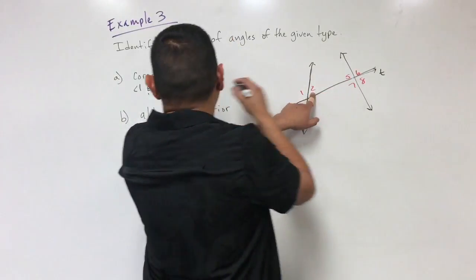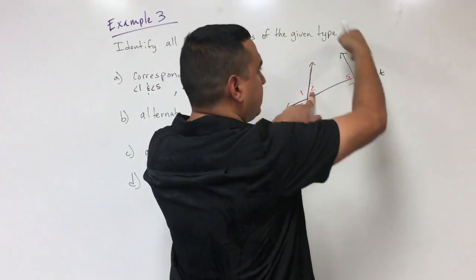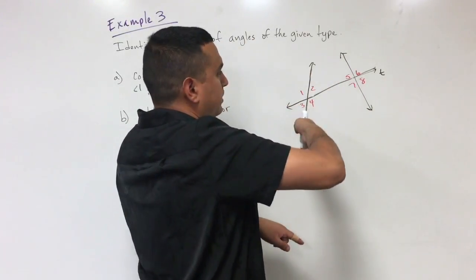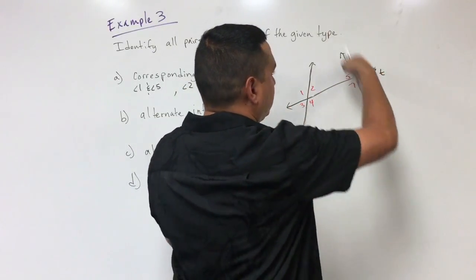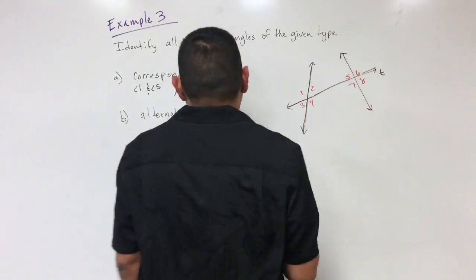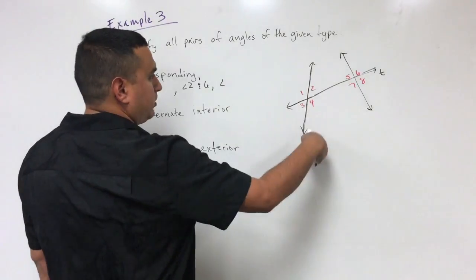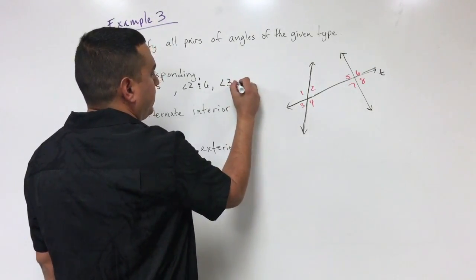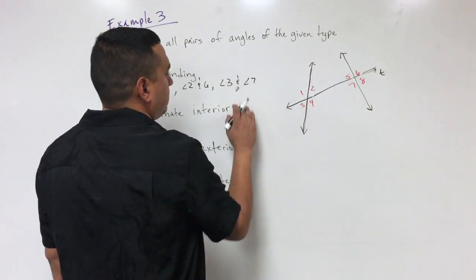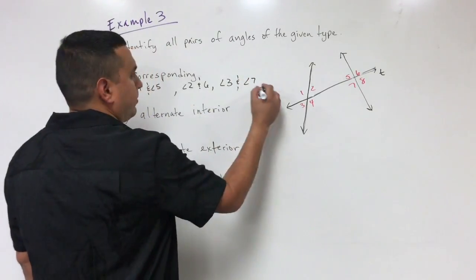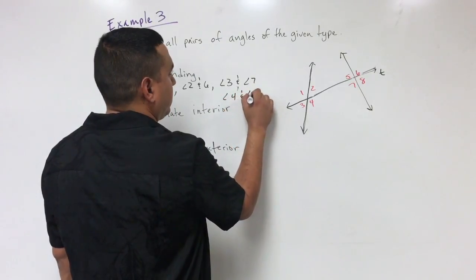Staying above the transversal and going to the right side gives angle two, and its corresponding angle is angle six since it's on the right side of its line — so two and six are corresponding. Below the transversal gives us angle three corresponding to angle seven. And that leaves angle four corresponding to angle eight.